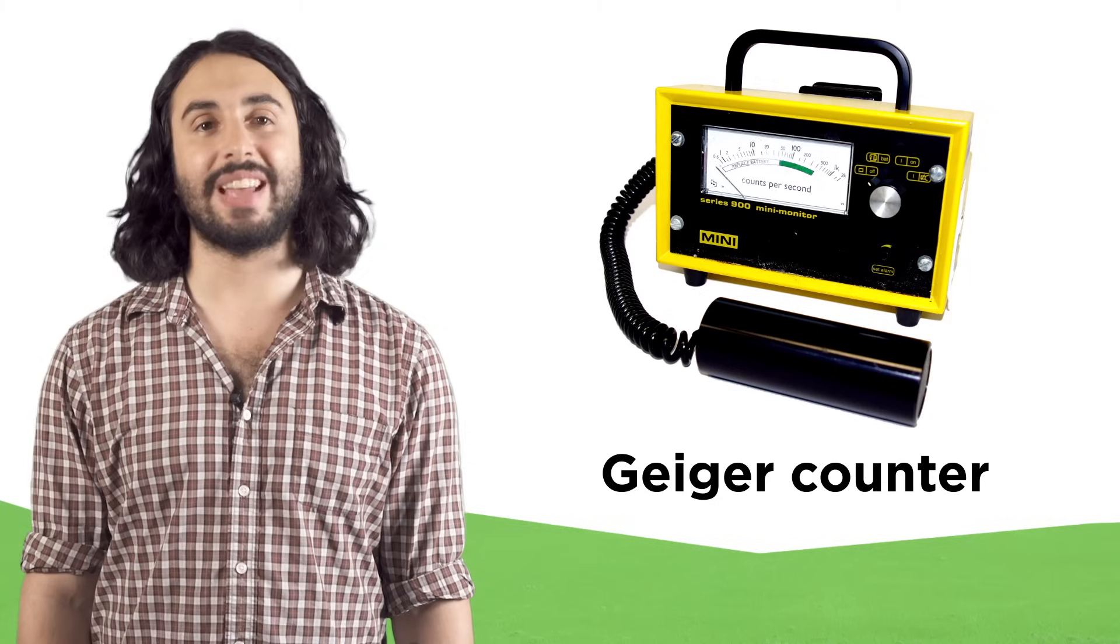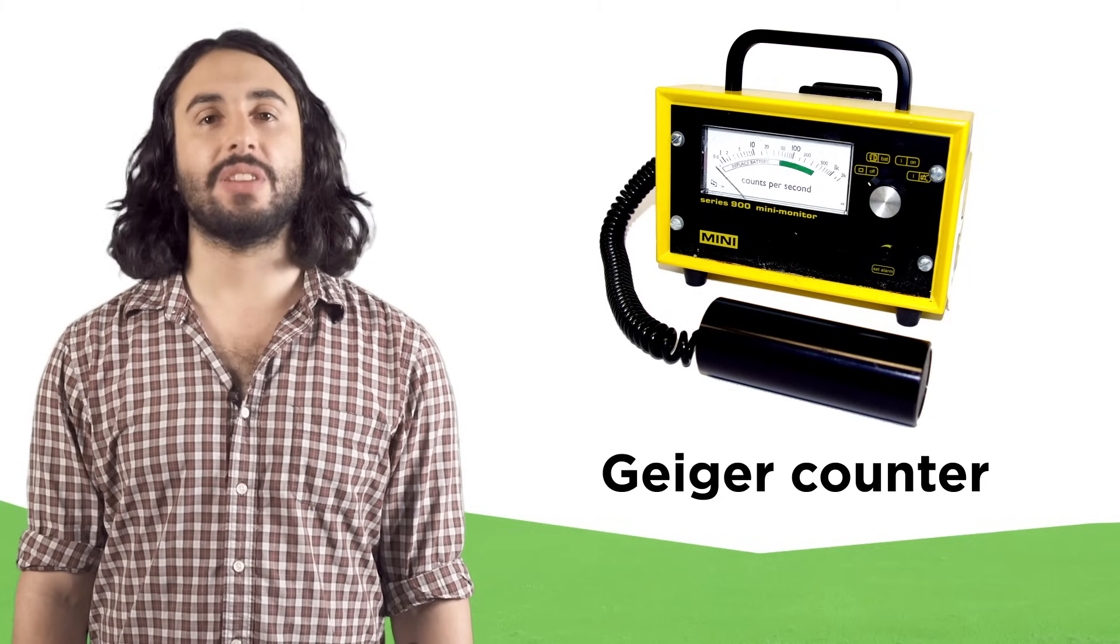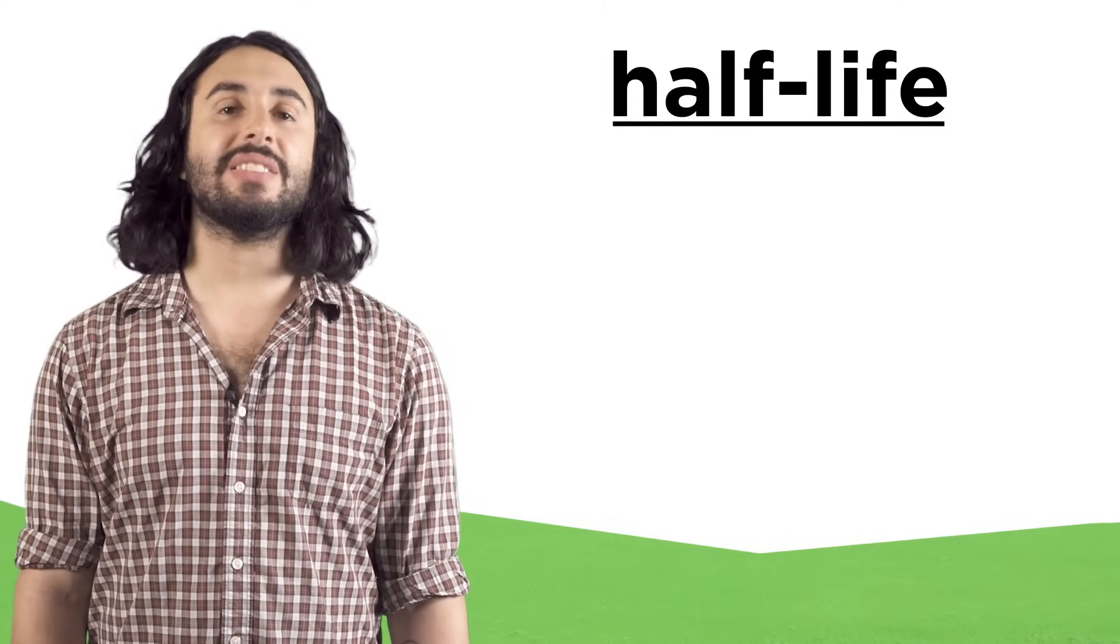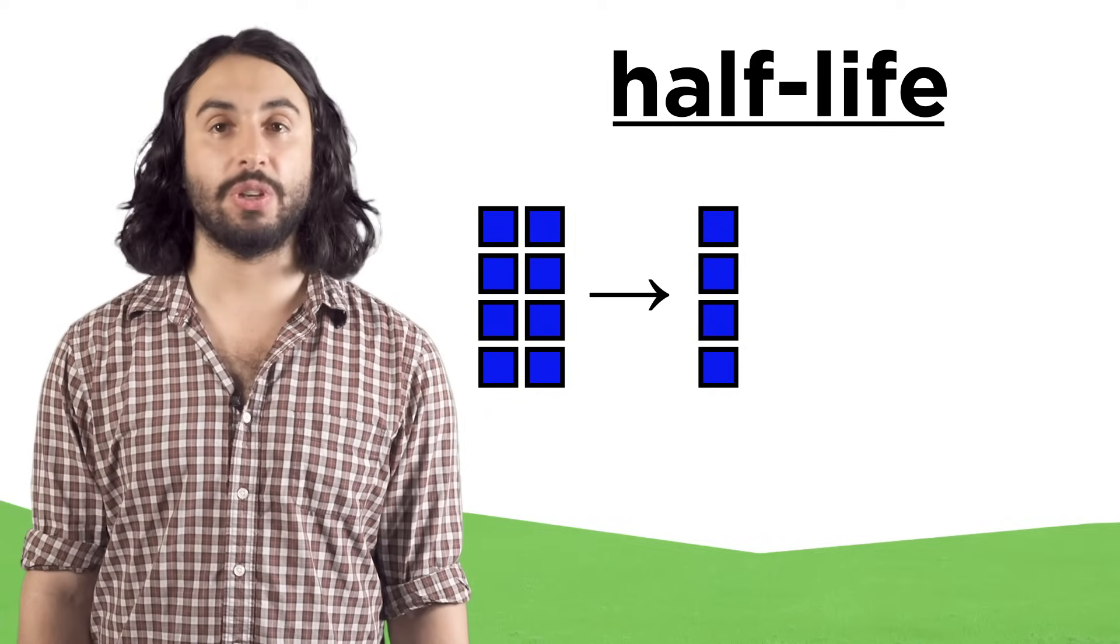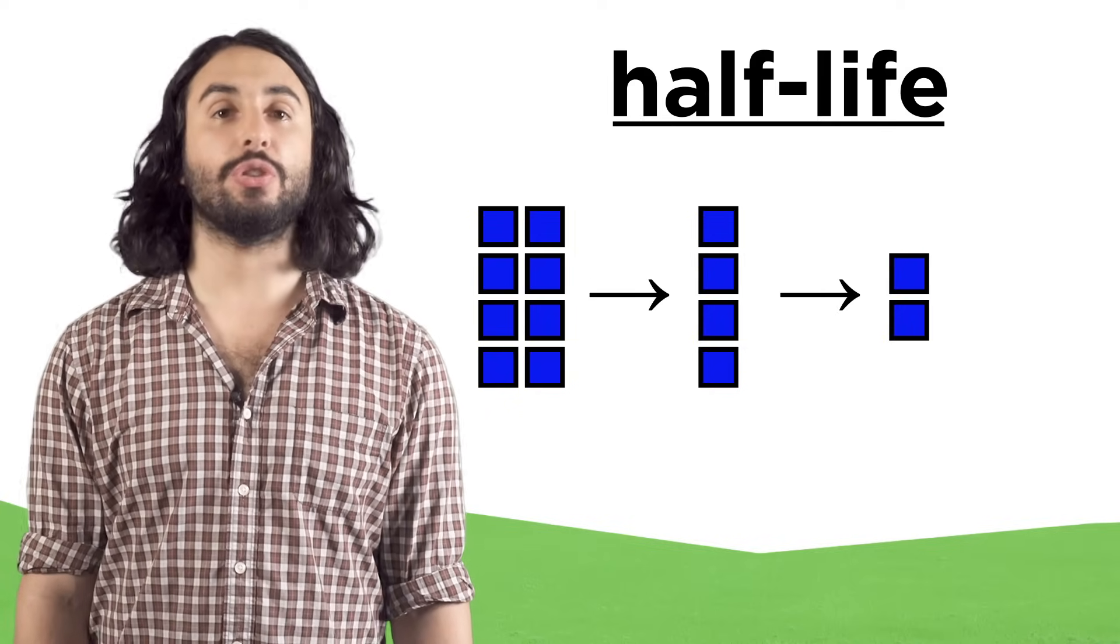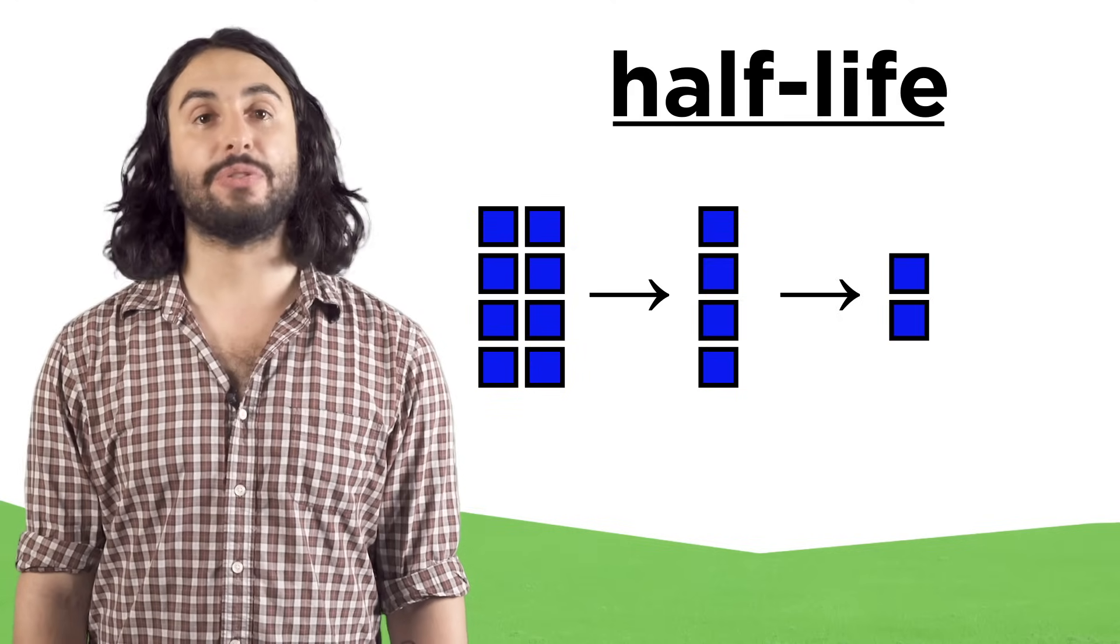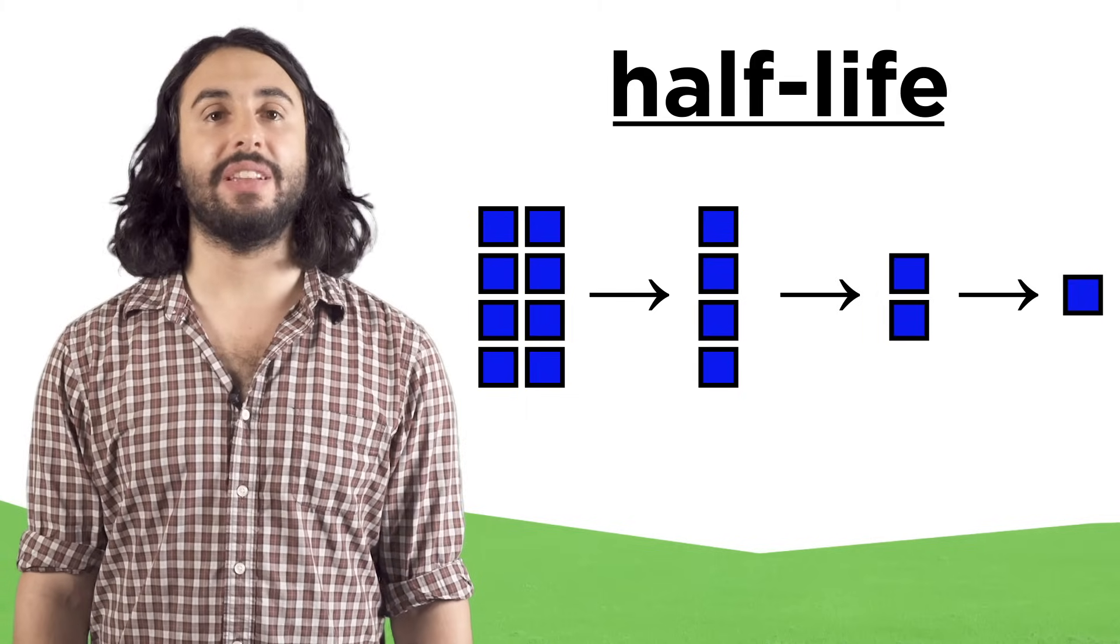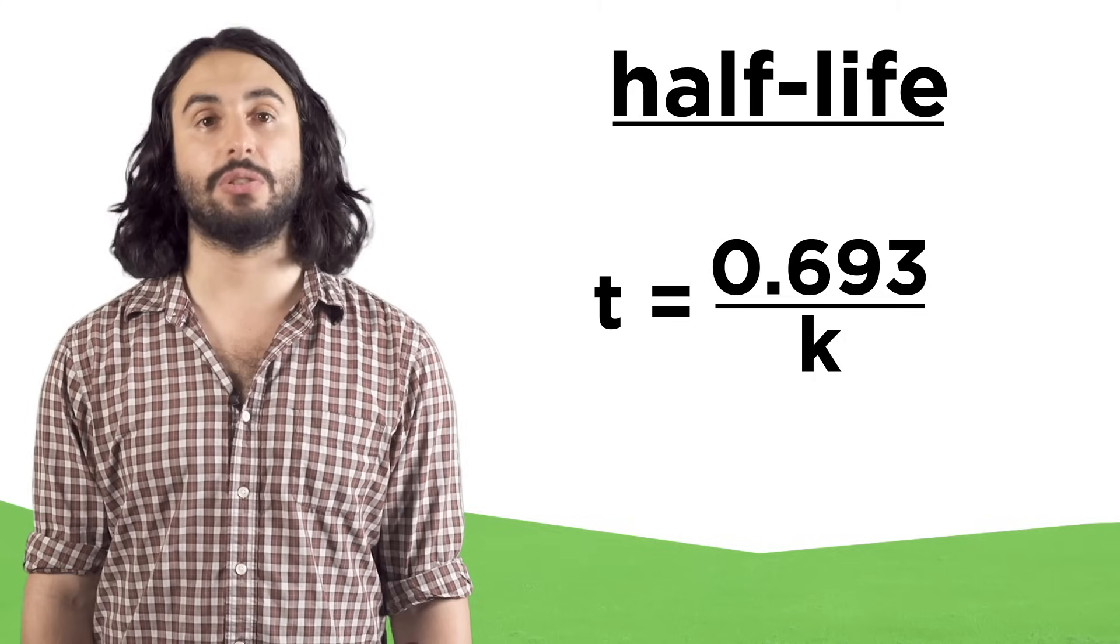So we have ways of detecting radiation, like Geiger counters. We will often talk about radioactive material in terms of a half-life. This is the time it takes for a material to be depleted to half the original amount. After two half-lives there would be one-fourth the original amount. After three half-lives, one-eighth, et cetera. Half-life is given by the following formula, where k is a constant specific to the material.